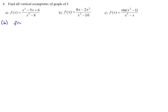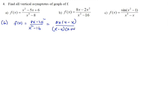Let us see part b. In part b, we have the function f(x) = (8x minus 2x squared) over (x squared minus 16). Let us factor. The factorized form becomes 2x(4 minus x) over (x minus 4)(x plus 4), which can also be written as minus 2x(x minus 4) over (x minus 4)(x plus 4). This simplifies to minus 2x over (x plus 4).